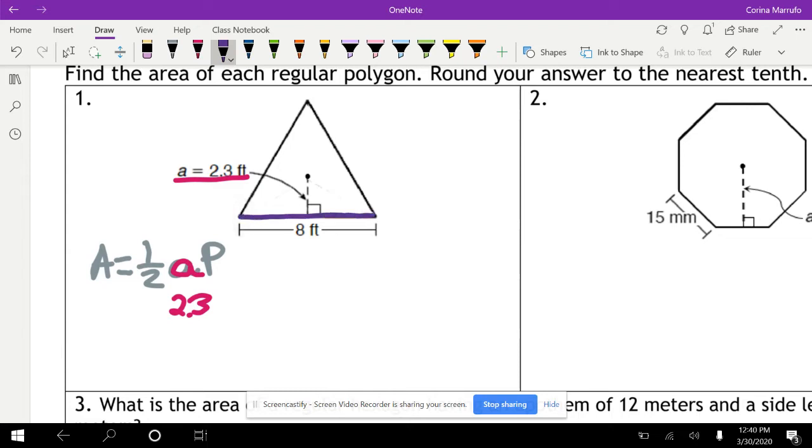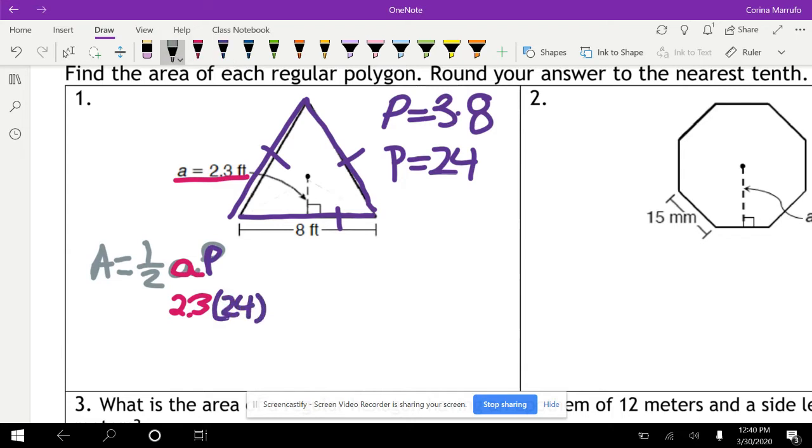And then the P is our perimeter. So we need to find the perimeter. If this side of our triangle is 8, and all the sides should be the same because this is a regular polygon, our triangle has three sides. So we're going to do 3 times 8. All of them should be 8. So 3 times 8 gives us 24. So our perimeter here is equal to 24.